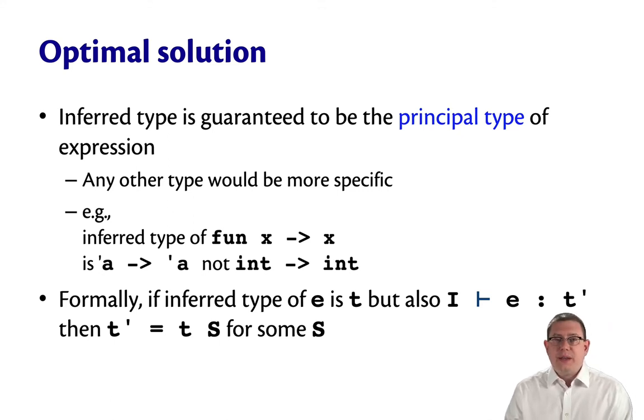Then we're guaranteed that T prime is actually equal to T with an additional substitution S for some substitution. We don't necessarily know what it is. In other words, T prime would have to be a more specific type than T was because it involves doing some additional substitutions.